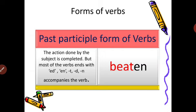Past participle forms indicate that the action was completed long ago. Most past participle forms end with -ed, -en, -t, -d, and -n. For example, beat is the present form, and if -en is added at the end, it becomes beaten — that is the past participle form.